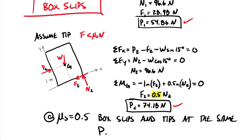Some problems you'll encounter may not involve tipping but may have multiple planes of slipping. Address these the same way: make assumptions, check if they're correct, set up multiple free body diagrams and equations of equilibrium. Often the parameter you're checking is a driving force like P, but sometimes it's an angle θ — you find at what angle it slips versus at what angle it tips, and the controlling angle is the smaller of the two. Thank you for your attention today.